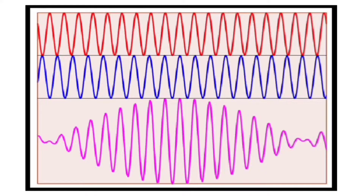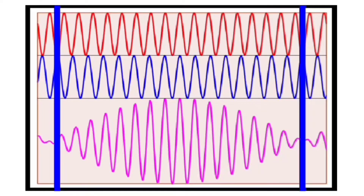When the interfering waves are in phase, they interfere constructively and we get the maximum amplitude. And when the waves are out of phase, they destructively interfere producing minimum amplitude.